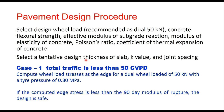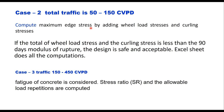Case 1: when total traffic is less than 50 CVPD, compute wheel load stresses at the edge for a dual wheel load of 50 kN with tire pressure 0.8 MPa. If this stress is less than the 90-day modulus of rupture of the concrete, the design is safe; if not, increase the thickness. Case 2: when traffic is between 50 and 150 CVPD, compute maximum edge stress by adding wheel load stress and curling stress. If total stress is less than the 90-day modulus of rupture, design is safe. Excel sheets are provided for these calculations.